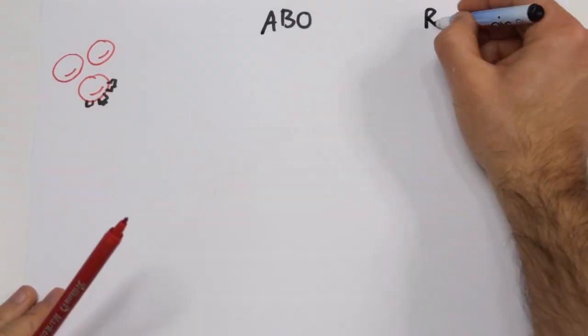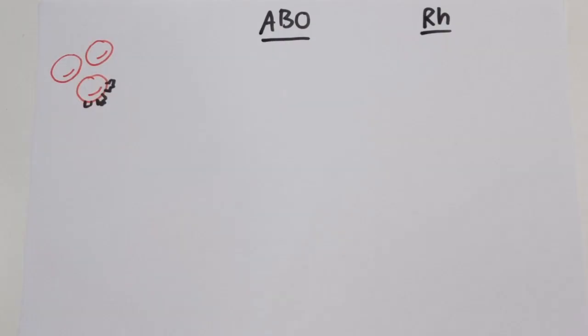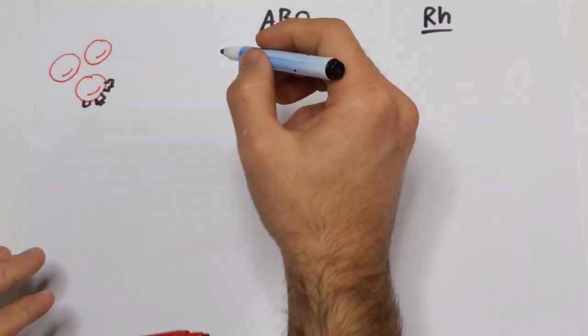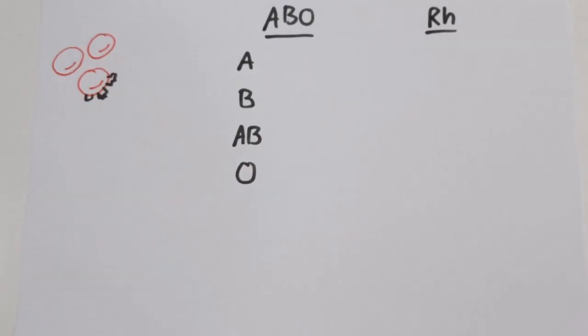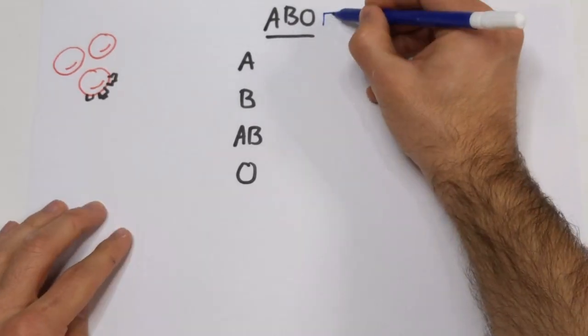We group those antigens to better identify them. The ABO and Rhesus groups are the most important and widely used red blood cell antigen groups. The ABO group of antigens is what determines our blood type A, B, AB, or O. It is made up of two main antigens, the A antigen and the B antigen.